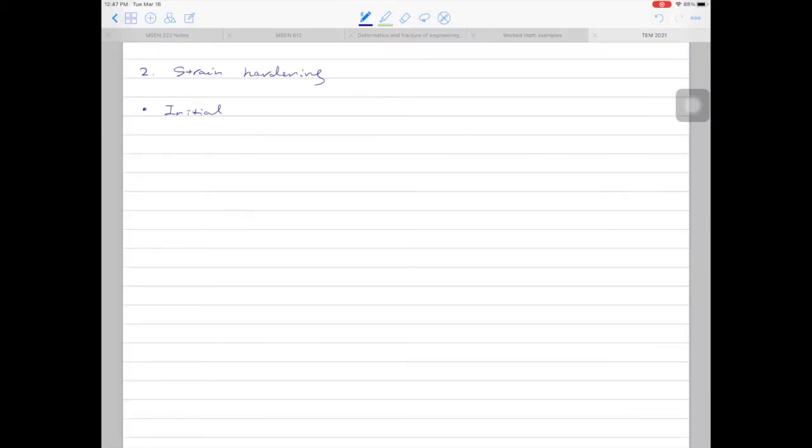Before considering strain hardening, let's start by looking at the initial dislocation densities in metals. For well-annealed samples, usually the dislocation density ranges from 10 to the power of 9 per meter squared. For heavily deformed samples, the dislocation density usually ranges from 10 to the 13th to 10 to the 14th per meter squared.